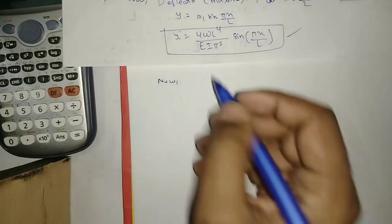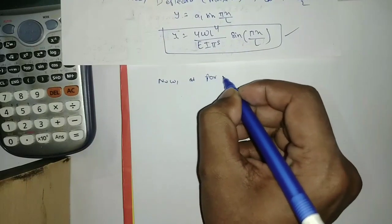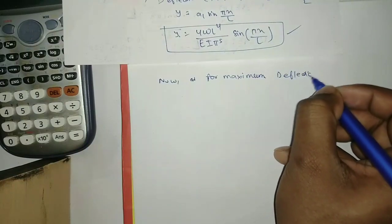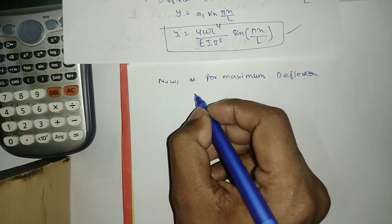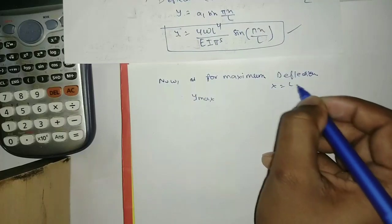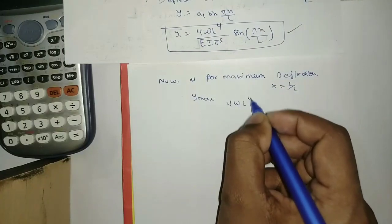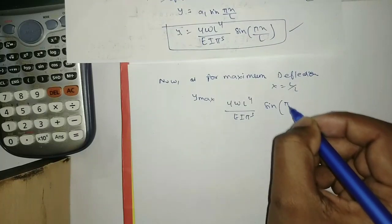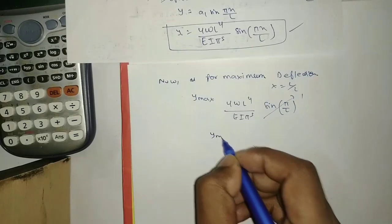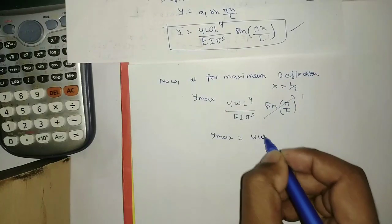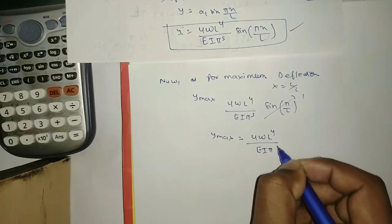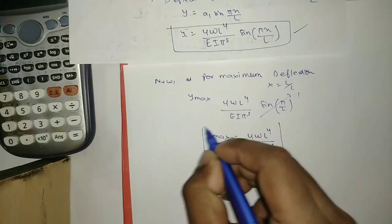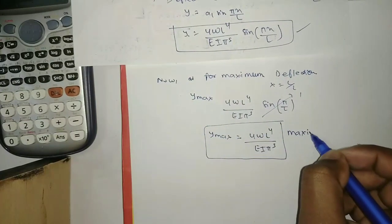For maximum deflection, we put x = L/2 into the deflection formula. At x = L/2: y_max = [4WL⁴/(EI·π⁵)]·sin(π/2) = 4WL⁴/(EI·π⁵), since sin(π/2) = 1. This is our maximum deflection.